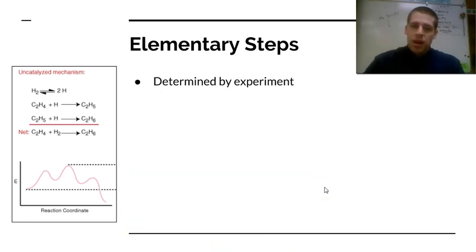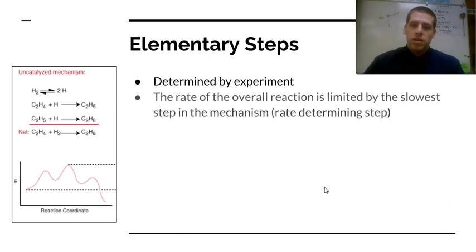As I said before, the elementary steps have to be determined by experiment, and we use kinetics to help us figure out what the mechanism actually is. The rate of the overall reaction is limited by the slowest step in the mechanism. That's a really important point. We call this the rate determining step. So the slowest step, one of these steps is slower than all the others, and that's what's going to affect the rate of the overall reaction.